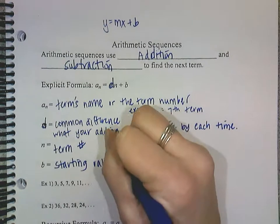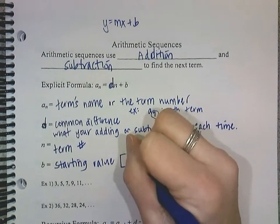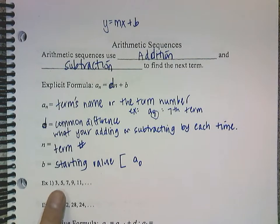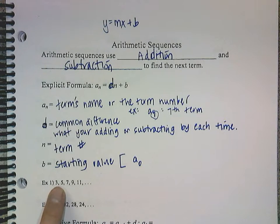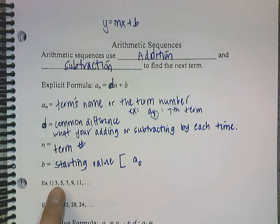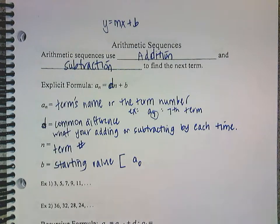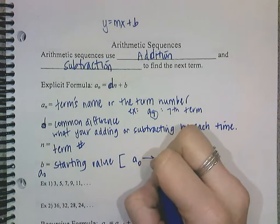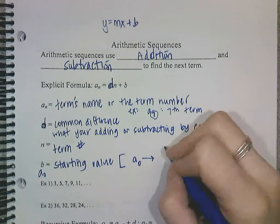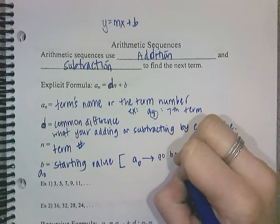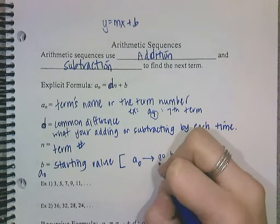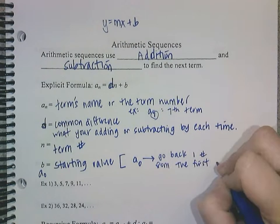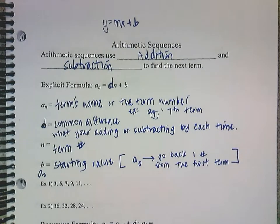And then here's, this is what it means. So we're trying to figure out what a sub 0 is. So the number before we actually begin, because the first one, like this guy, number 3, this is our a sub 1. So we need a sub 0 for our b. So our b is the same thing as a sub 0. Okay, so a sub 0, again, just as a little reminder, we're going to go back one number from the first term.